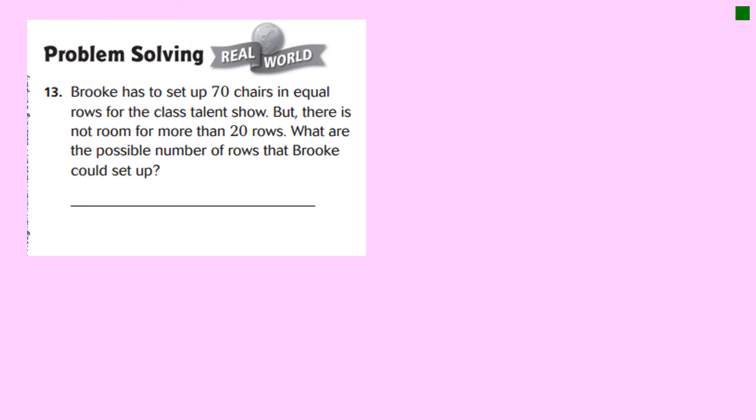All right, we are down here at problem solving. And unbelievably, they have given you the number 70. Brooke has to set up 70 chairs in equal rows for the class talent show. But there is not room for more than 20 rows. What are the possible number of rows that Brooke could set up? So let's think about this. She has 70 chairs, but she can't make more than 20 rows. She can't make 70 rows, she can't make 35 rows - that's too many rows. She can only go as far as 20 rows.